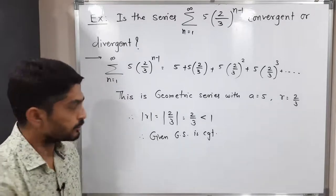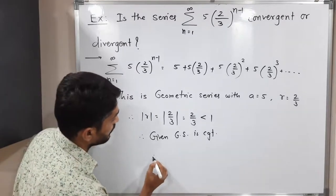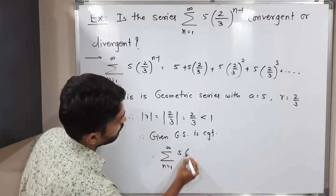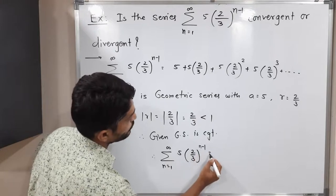So let us find its sum also. So therefore, summation n running from 1 to infinity, what is the series we have? 5, 2 by 3 raised to n minus 1. What is its sum?